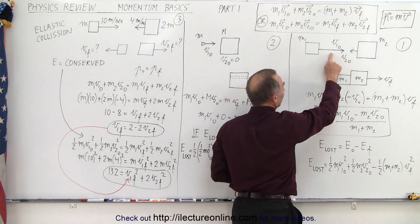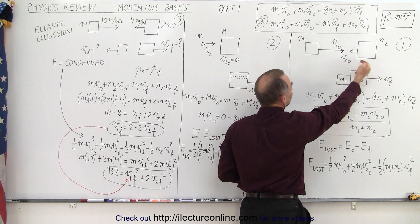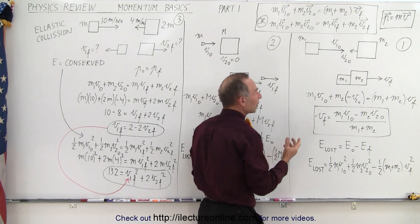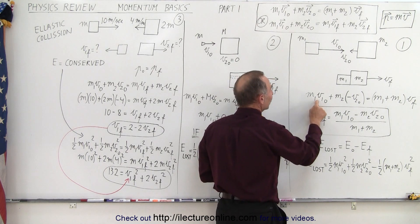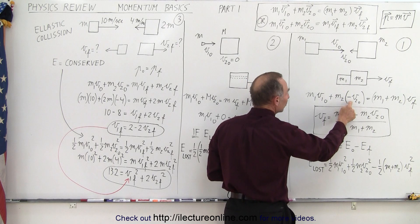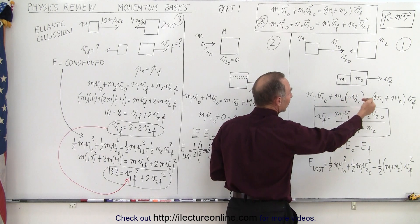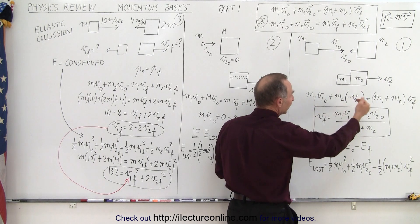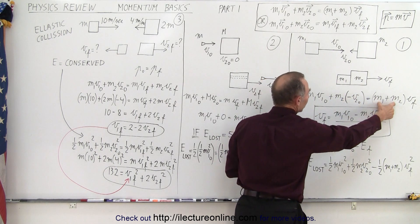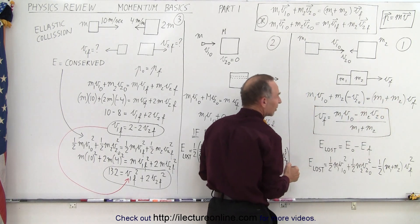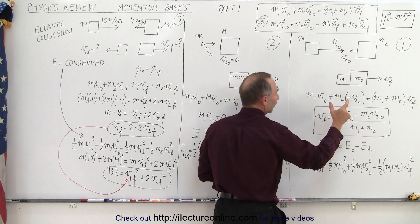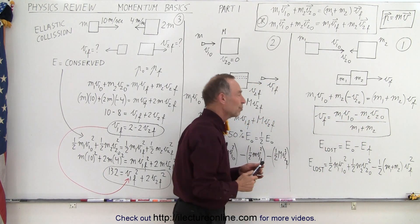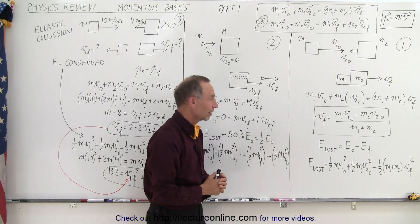V1 initial is a positive value and V2 initial is in the negative direction. So we write M1 times V1 initial plus M2 times V2 initial with a negative sign, because the direction is negative — the magnitude is still V2 initial but it's negative. That equals the sum of the two masses times the final velocity, and solving for final velocity gives us the momentum of the first object minus the momentum of the second object divided by the sum of the two masses.